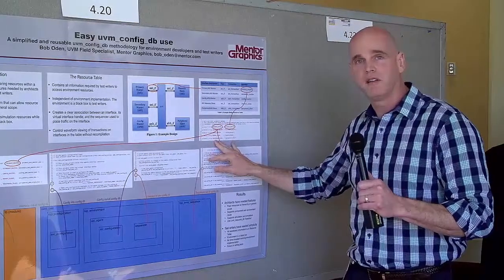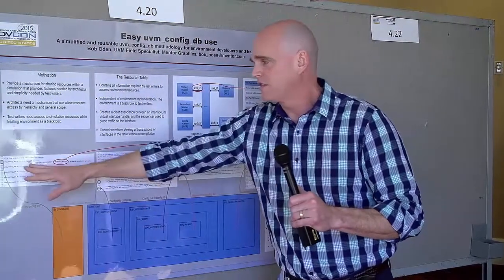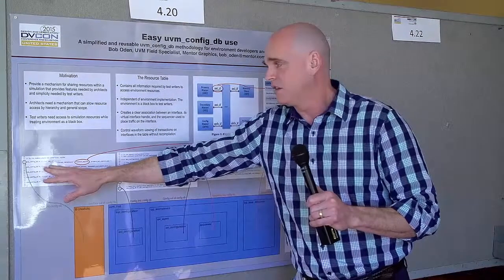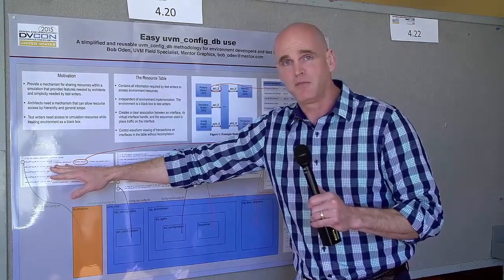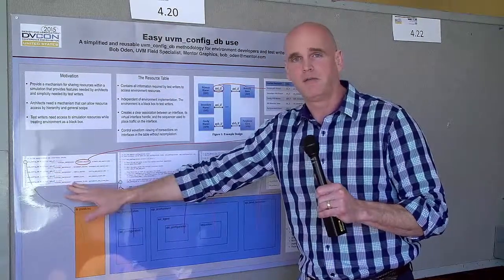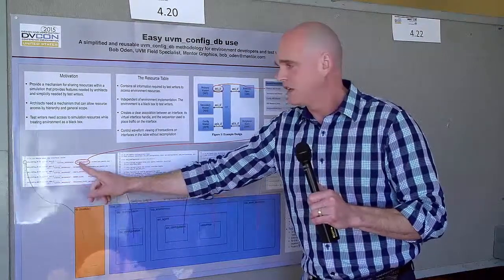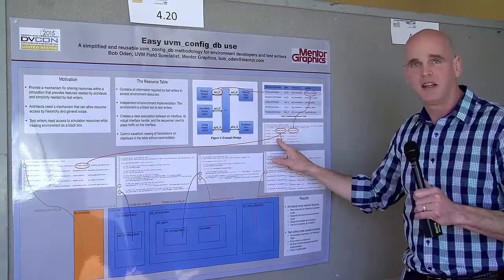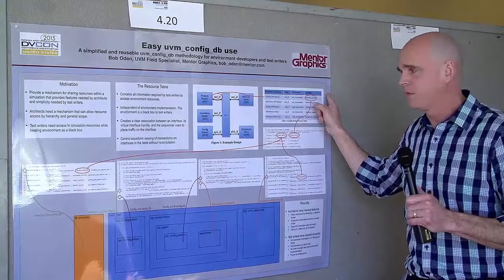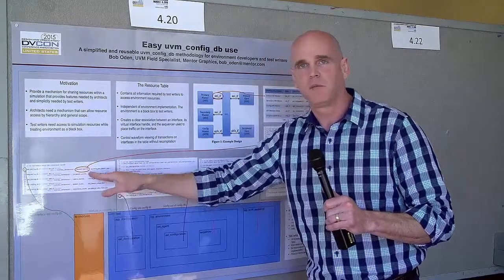These parameters are then used when passing the virtual interface handles. So it uses the configdb set function to place the interface handle into the config database. The scope for this set call is null virtual interfaces. Virtual interfaces being a string. That virtual interfaces scope is a general scope that's used for all of the interfaces. The field name argument for the configdb set call is the identifier that we set here as a parameter that came from the table. That field name uniquely identifies that interface within the config database.